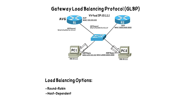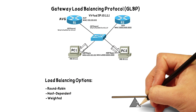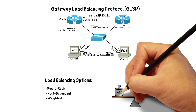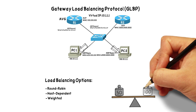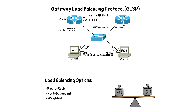With round-robin, we're giving each AVF equal weighting — giving out their MAC addresses an equal number of times. However, we might have a higher-powered router or multi-layer switch that we want to get the bulk of the traffic. We want to give out its virtual MAC address more often than an older router in the GLBP group. We can do that using the weighted load balancing option. With weighted load balancing, we associate a weight with different Active Virtual Forwarders. For example, if R1 has a weight of 50 and R2 has a weight of 100, for every one time we give out R1's virtual MAC address, we give out R2's virtual MAC address twice, because 100 is two times 50.